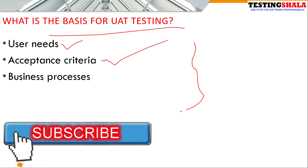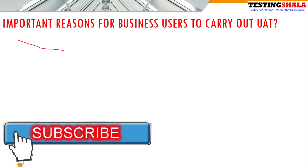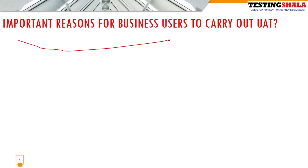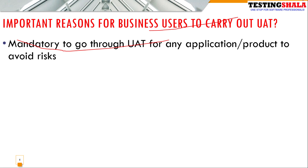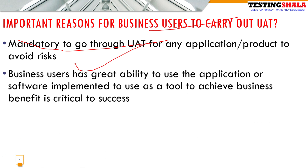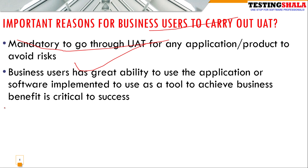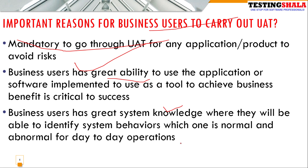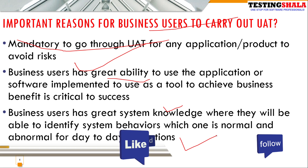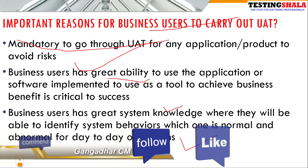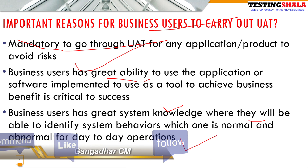The third question is: what are the important reasons for business users to carry out UAT? If UAT is not performed, there are chances of higher risk and higher issues being found by the business user when deploying the application. Second, business users have a great ability to use applications. Third, business users have great system knowledge — these are the people who gave the requirements and can easily identify normal or abnormal system behavior.